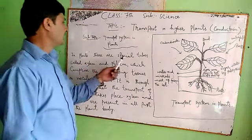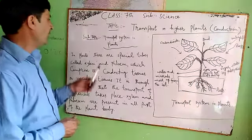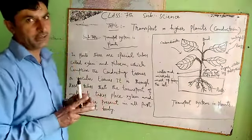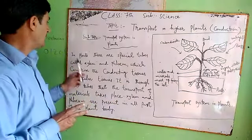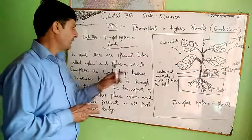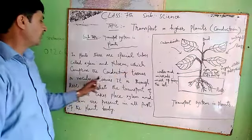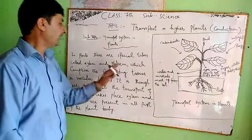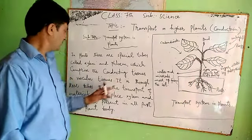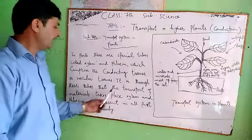In plants, there are special tubes called xylem and phloem, which comprise the conducting tissues or vascular tissues. It is through these tubes that the transport of materials takes place.